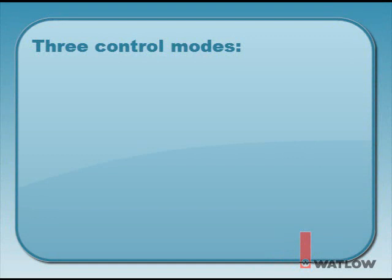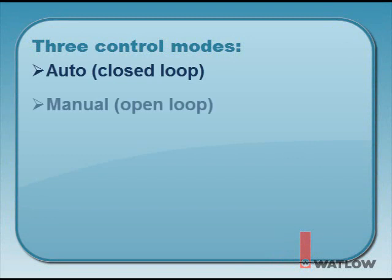The controller has three control modes of operation: Auto mode, also referred to as closed loop control; Manual mode, also referred to as open loop control; and Off, where there is no control output.